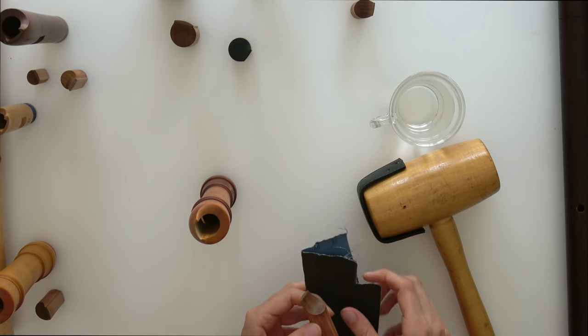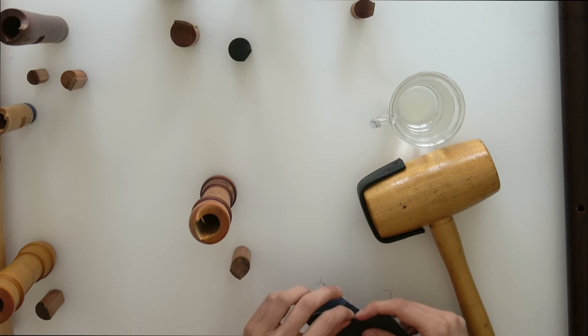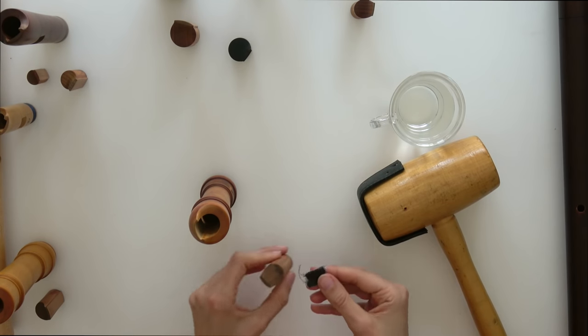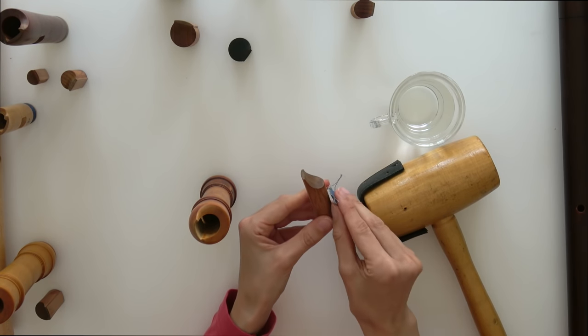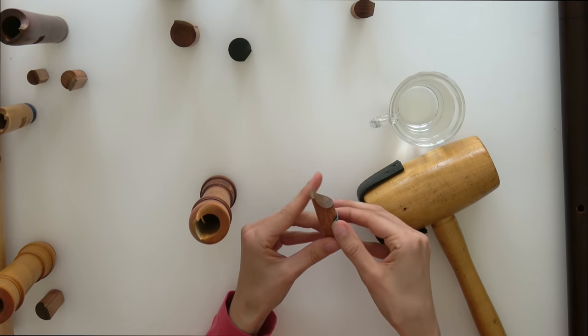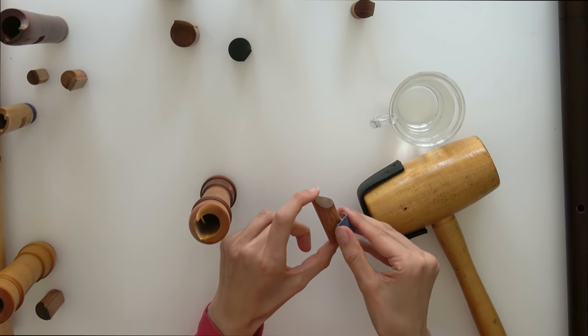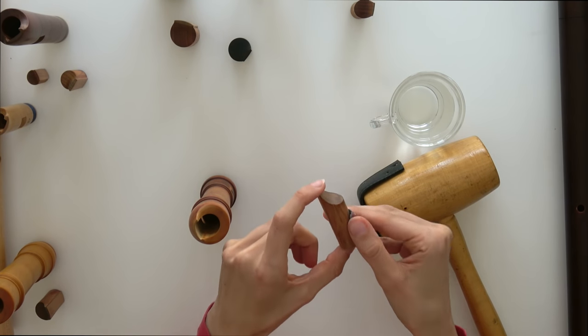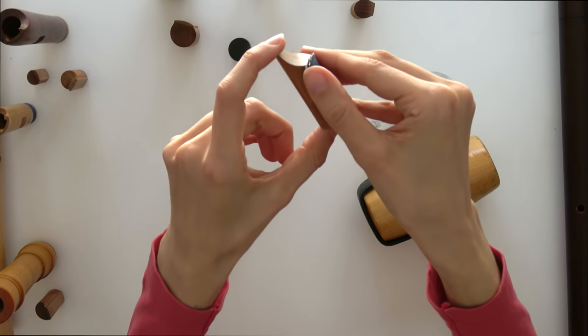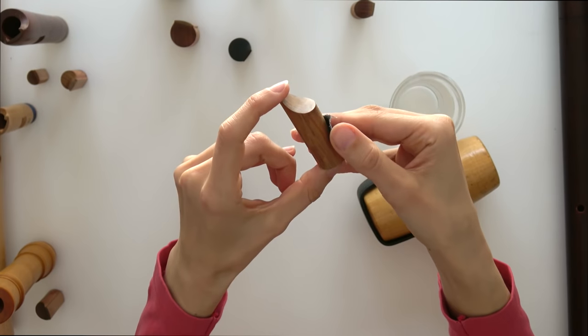If the block is too difficult to get in, then we can sandpaper the block a bit, on the rounded part, just a little bit. Don't ever touch the straight part with sandpaper. That's work for the instrument maker who knows what they're doing.